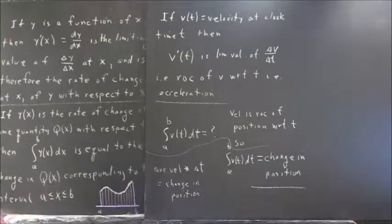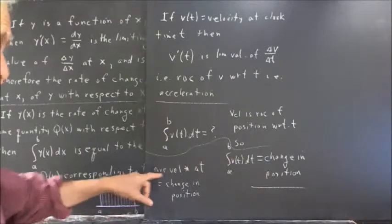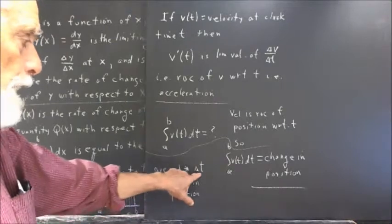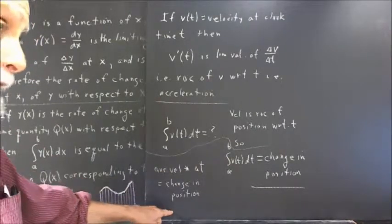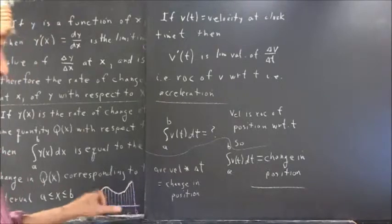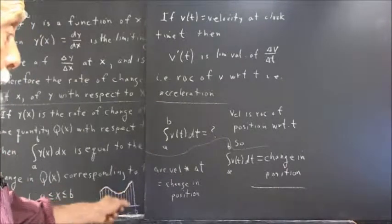Same thing here. And if we can say that on each small interval, we take the average velocity multiplied by delta t, we're going to get a very good approximation to the change in position. And as the size of those intervals shrinks down, when we add them all up,